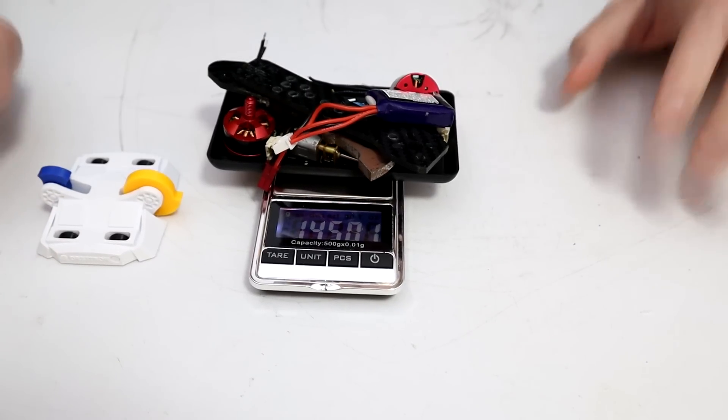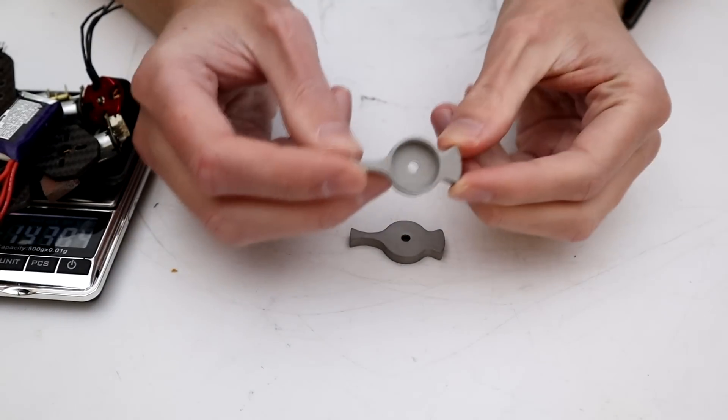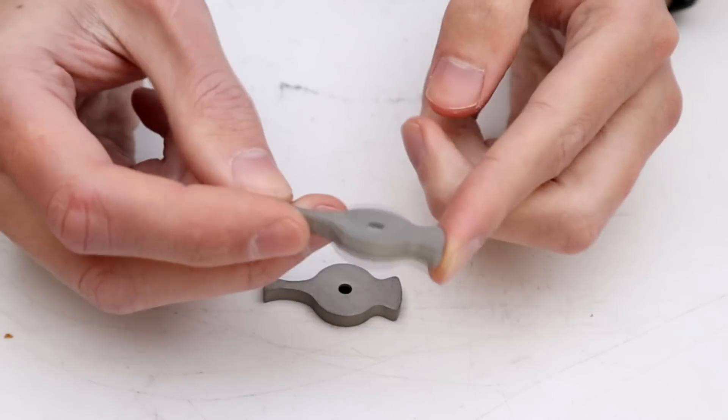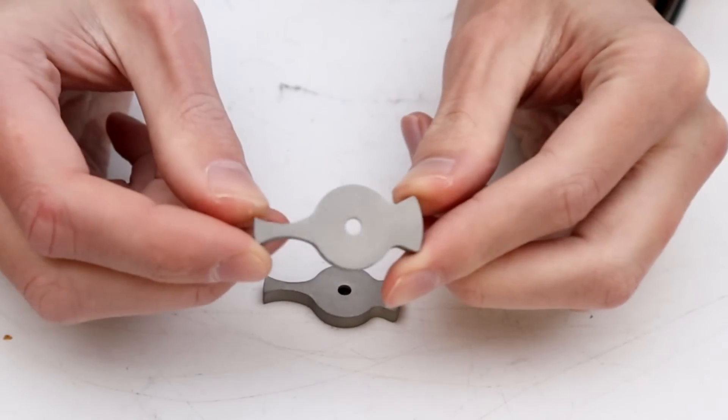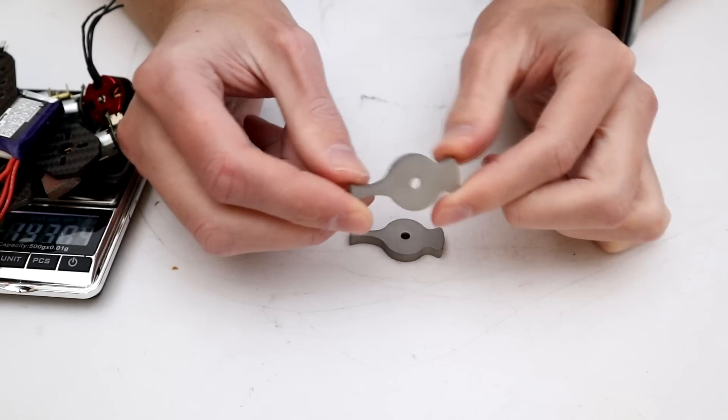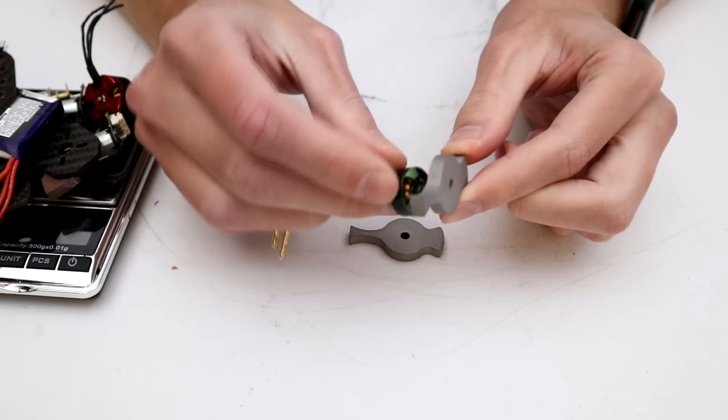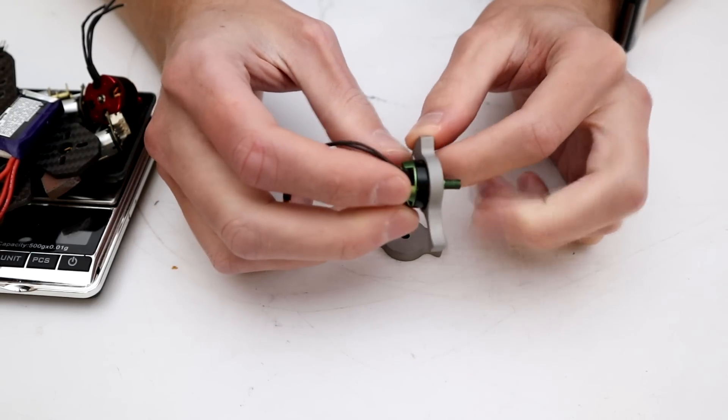And this is where PCBWay comes in. They have sent me some brand new weapon blades. These are 3D printed tool steel, which means that I could print them in exactly the shape I want, cut a bunch of weight out compared to the old blades that I use normally, and also run them on a smaller weapon motor. And these fit in pretty nicely.